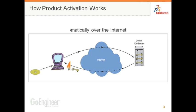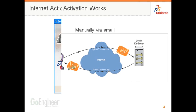Product activation involves only a few simple steps that take place upon first launch of your SOLIDWORKS product. During the activation process, SOLIDWORKS verifies the product's serial number and activates the software on your machine. You can activate over the internet for computers directly connected, or by email for those that aren't. Once activated, the software is ready to be used and doesn't require further action.